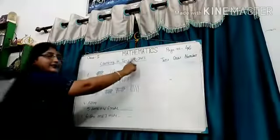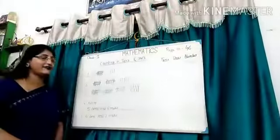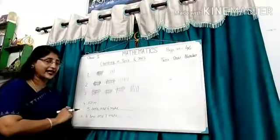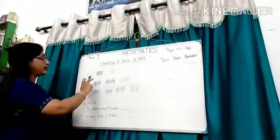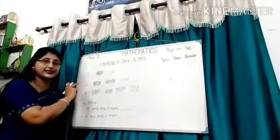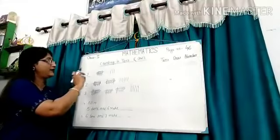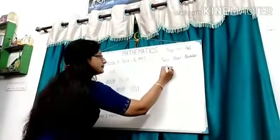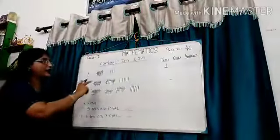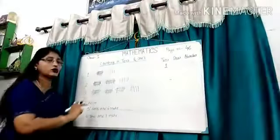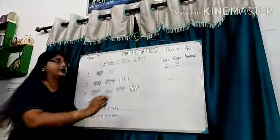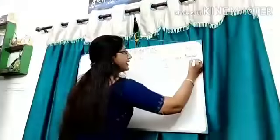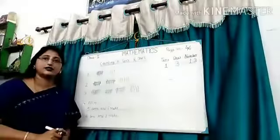Look at the board. Counting in 10s and 1s. Here I have 1 bundle of 10 sticks and 1, 2, 3, 3 loose sticks. So 1 bundle of 10 sticks, 1 10s and 1, 2, 3, 3 loose sticks, 3 1s. So the number is 13. 1 10s and 3 1s, 13.